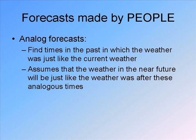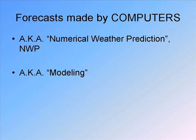But it is awfully hard to just look at a weather map and figure out what the weather is going to do. Generally speaking, meteorologists rely heavily on forecasts that are made by computers. The correct term for this is numerical weather prediction, or NWP, but meteorologists always use the word modeling to describe this.